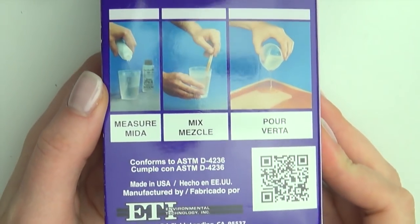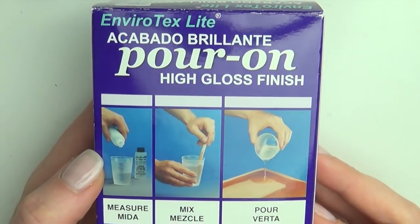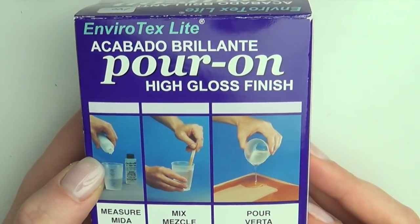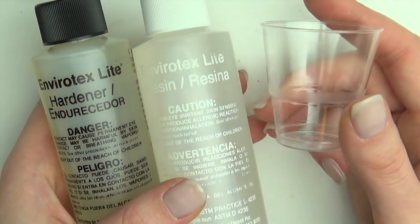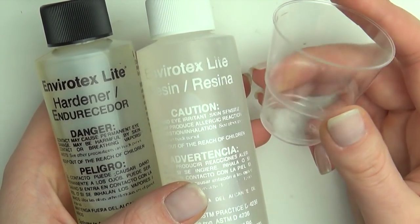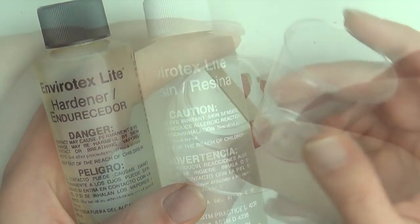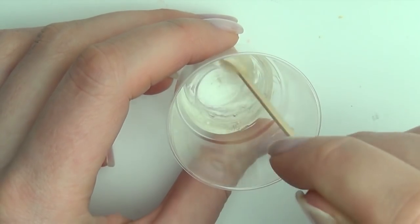Now onto the resin. I'm using this two component pour-on resin that I got at a local craft store. I prefer mixing the two components in a small plastic cup that's disposable. Add equal parts to the cup and mix it together.